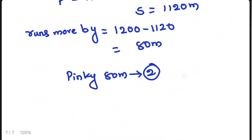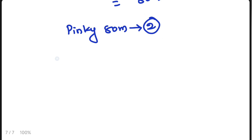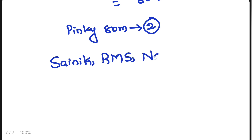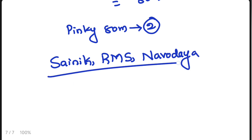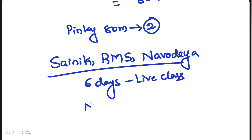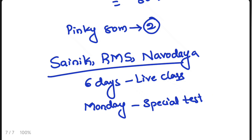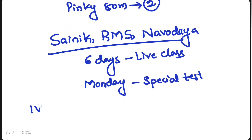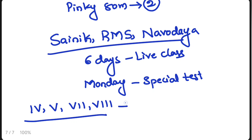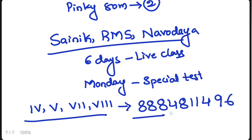My dear students and parents, we are conducting online classes for Sainik School, RMS, and Navodaya Entrance Examinations — everyday 6 days live classes plus a special test every Monday. Classes available for Class 4th, 5th, 7th, and 8th students. Contact our mobile number 388-48-111-496. Thank you, bye, take care, eat healthy, stay healthy.